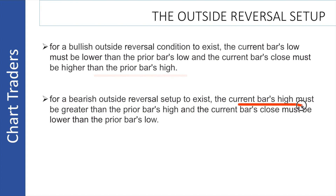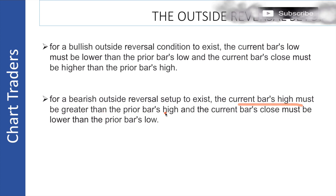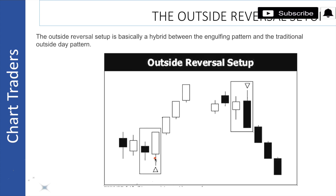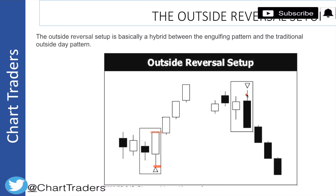For the bearish outside reversal setup, the current bar high must be greater than the previous bar high, and the current candle close must be below the previous candle's close. That is the condition.